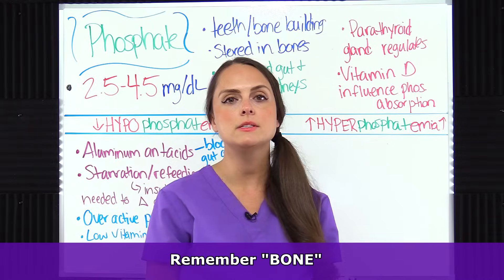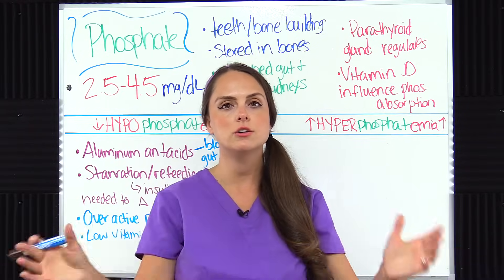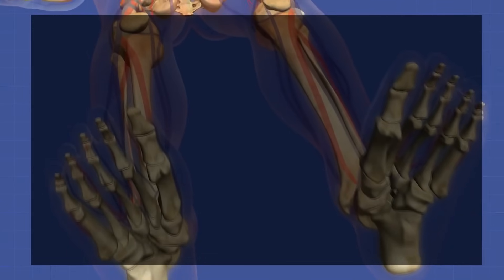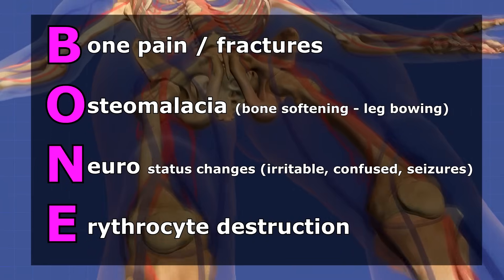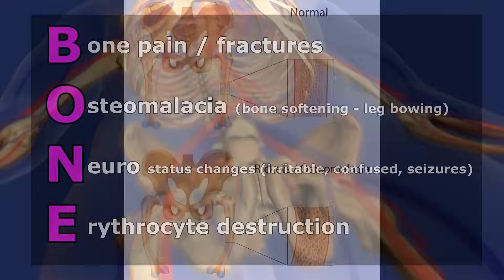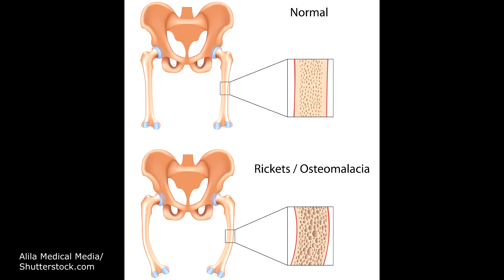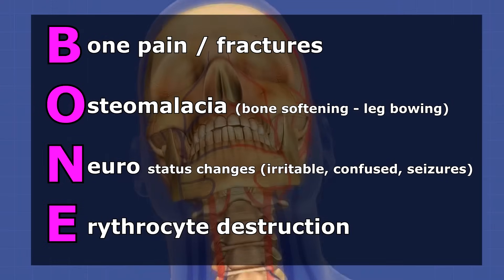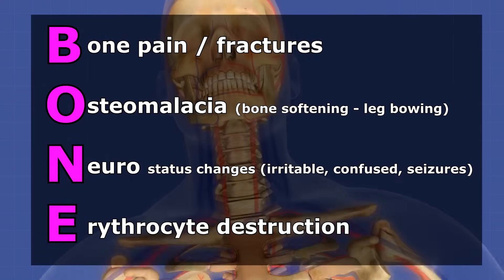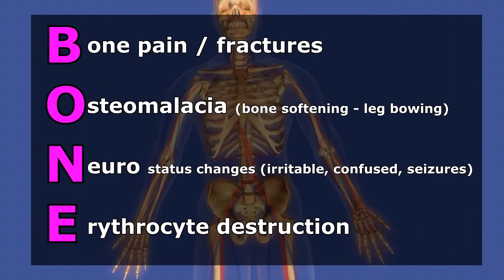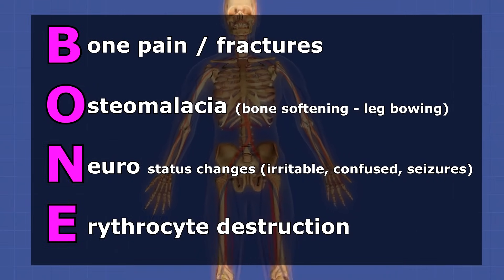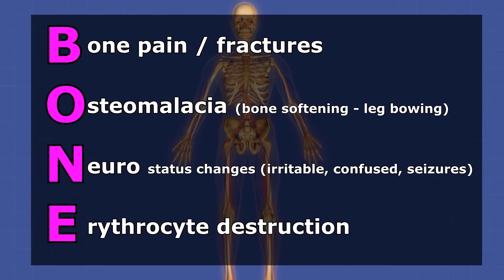For the signs and symptoms of hypophosphatemia, remember the word BONE — since phosphate is huge for bone health. B is for bone pain and fractures. O is for osteomalacia — softening of the bones, which in children can affect growth and cause bowing of the legs. N is for neuropsychiatric changes including irritability, confusion, and seizures. E is for erythrocyte destruction — phosphate plays a huge role with red blood cells, so we can have red blood cell destruction leading to hemolytic anemia.